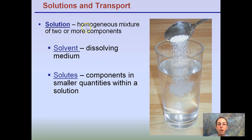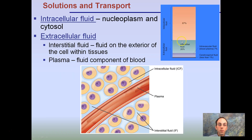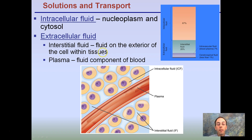Solutions and transport: a solution is a homogeneous mixture of two or more components — the solvent and the solute. The solvent is the dissolving medium, and the solute is the component present in smaller quantities. In the example of salt water, the solvent is the water and the solute would be the salt. Intracellular fluid — the cytoplasm and cytosol — is what's inside the cell. Extracellular fluid is what's on the outside, which can include plasma when talking about blood cells. Interstitial fluid is an example of exterior cell fluid, found outside the cells or tissues.